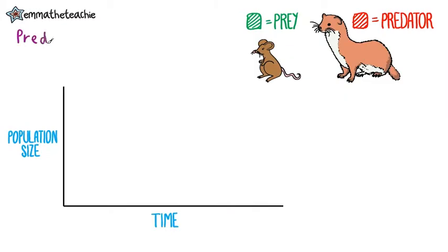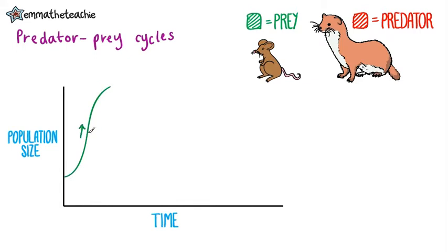Now let's look in more detail at predator-prey feeding cycles. If the prey, like this mouse, has access to lots of food, then its numbers will rise as more individuals survive and reproduce. We'll use green to represent prey. But if the predator now has a larger food source, it will be more successful too, so its population will increase as well. We'll use red for the predator.